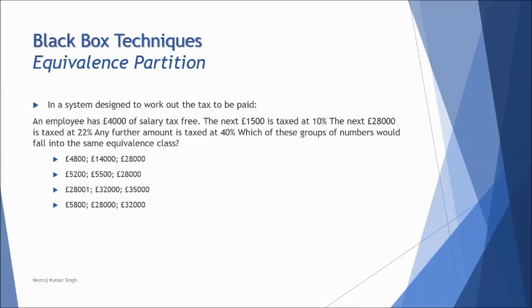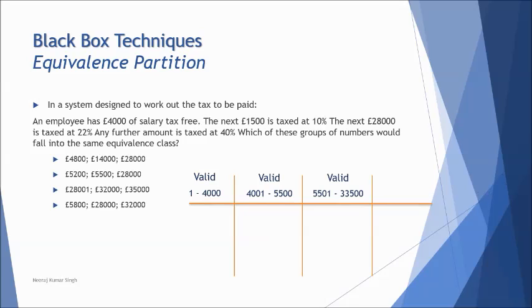ISTQB has different possibilities to ask you the same thing in different manners. So now this time they want you to answer which option would fall under the same class. And for that, creating the class, we need to just understand the scenario first. Now when we use the word next, it generally means that you add it to the previous value. So let's start creating the classes here. The very first range will be $1,000 to $4,000 because salary obviously cannot be considered as 0, or you can say that $4,000 or less than that. But let's be more precise that we are talking from $1,000 to $4,000 is tax-free. The next is $4,001 to $5,500, which simply means that the next $1,500 is added to the previous ending value.